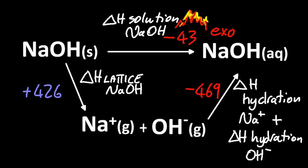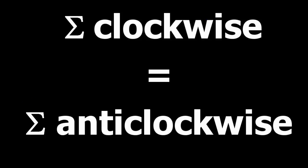Now, the lattice energy may be reported as positive or negative, depending on your source. And so you've got to make sure it's positive in this scenario or it doesn't work. And the clockwise arrows add up to the anticlockwise arrows.